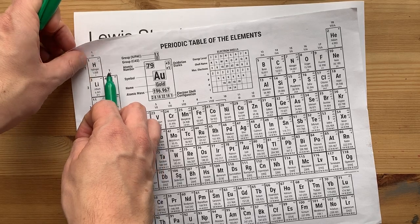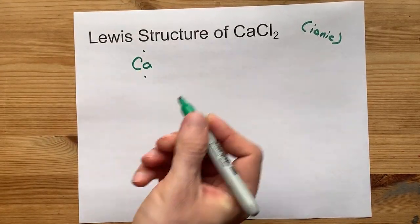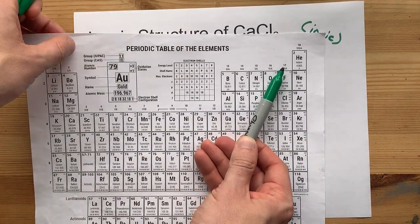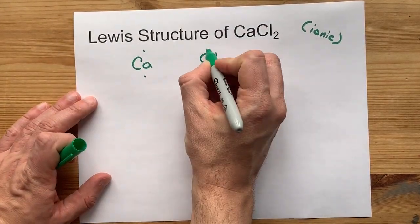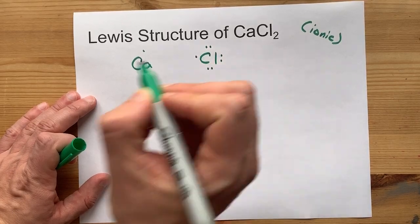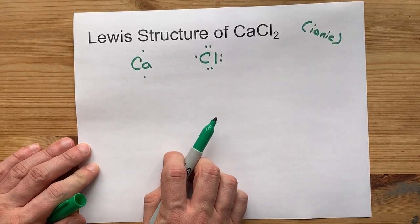Calcium is in group two. That means it brings two valence electrons with it. There you go. Chlorine is in group 17. It brings seven valence electrons with itself. One, two, three, four, five, six, seven. Notice I spread them out before I started doubling them up.